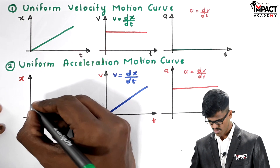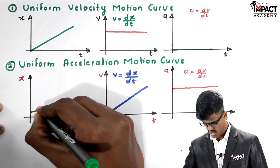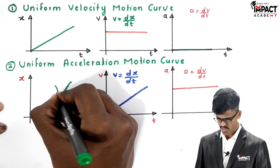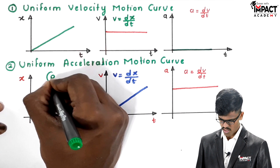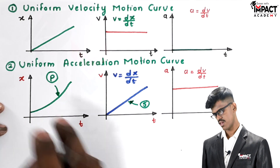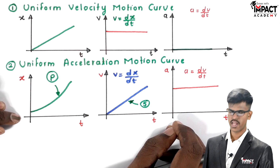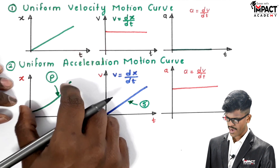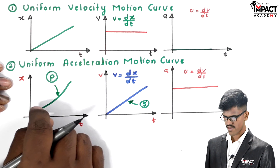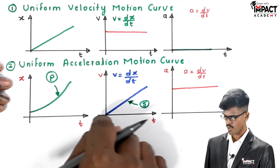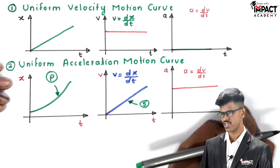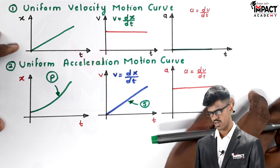Now we find the displacement curve. Velocity equals dx/dt, so if we find the slope on the x-t curve we get the velocity. Here the slope is increasing because velocity is increasing linearly. If the slope is increasing, the nature of the curve will be parabolic — a second degree equation. So the displacement-time curve for uniform acceleration motion is parabolic in nature. The slope of the straight-line velocity curve is a positive constant value.